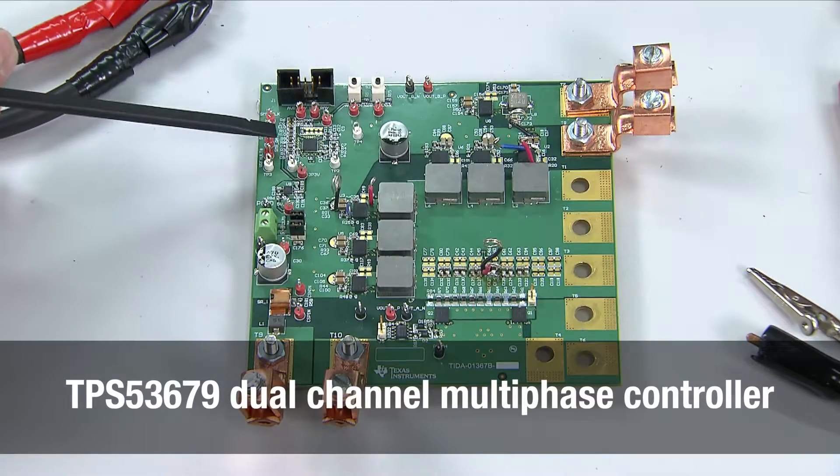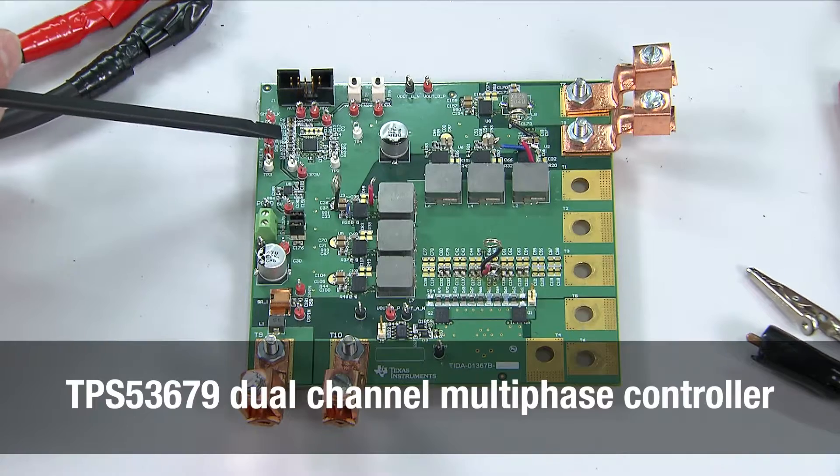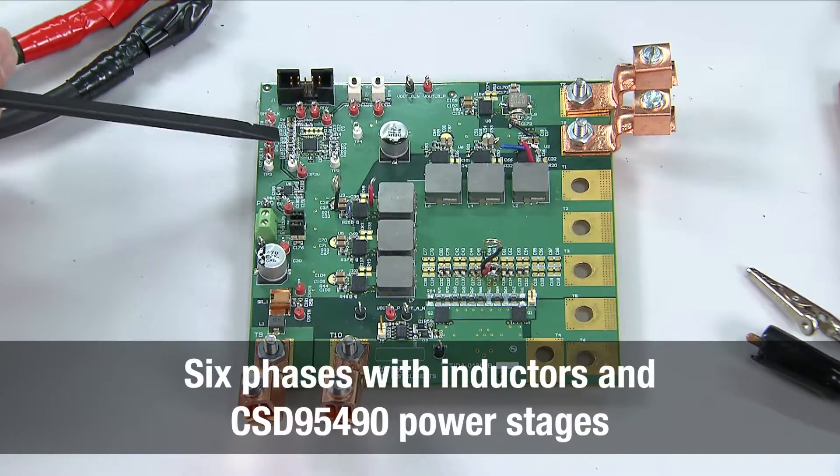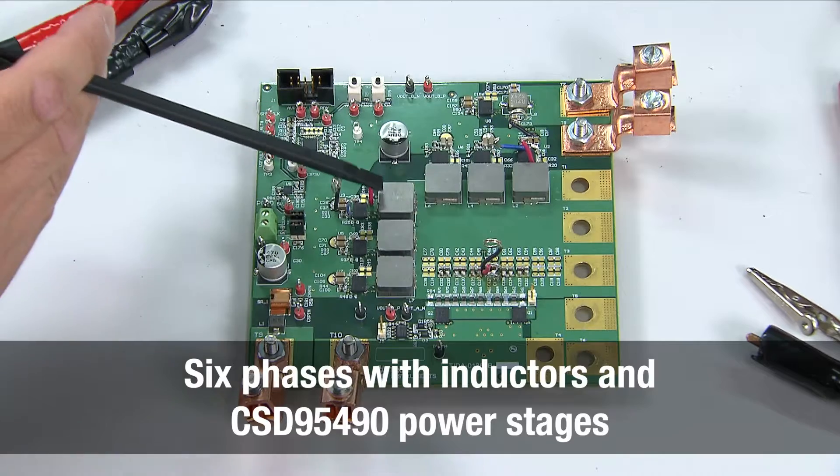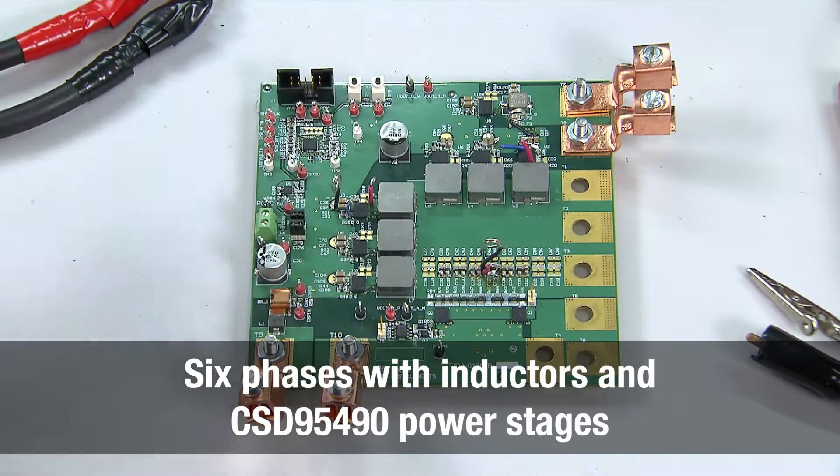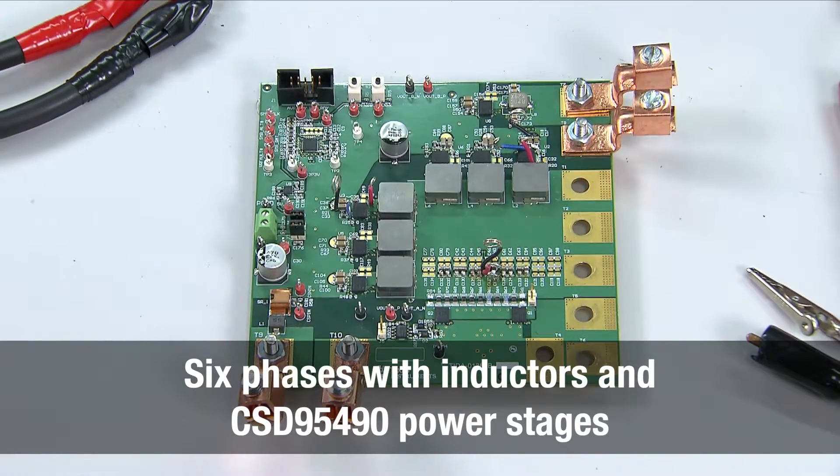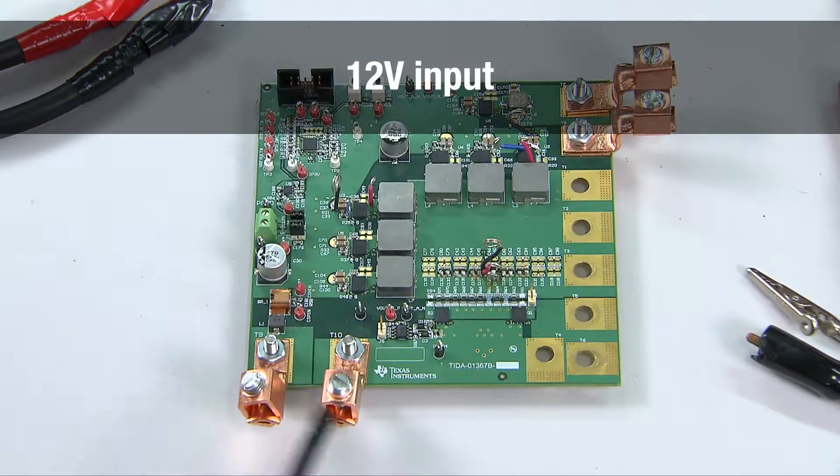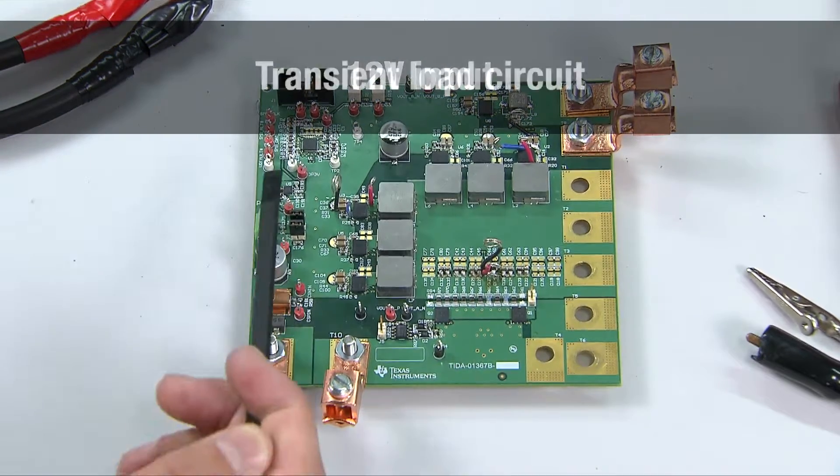Before we start testing, let's go over the basic layout of the board and where things are placed. The TPS 53679 controller is located on the top left of the board. The six phases with their inductors and CSD 95490 power stages are centrally located and laid out in an L shape to save space, though placing them in one straight line is acceptable too.